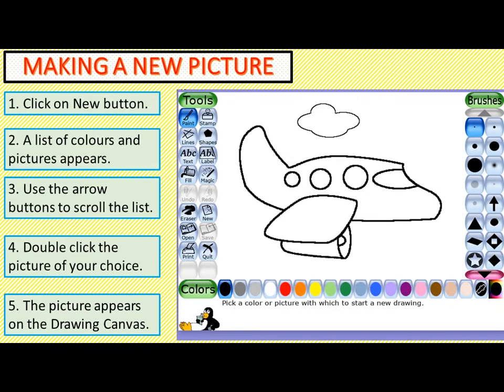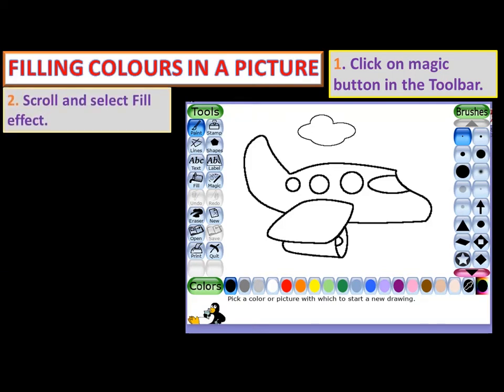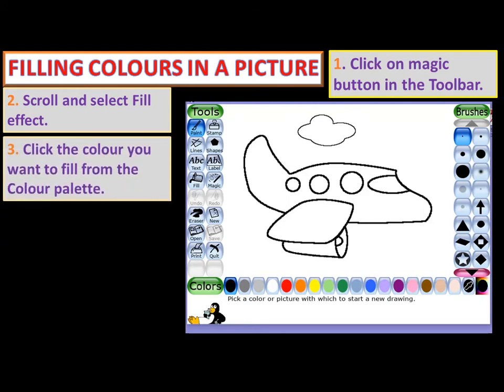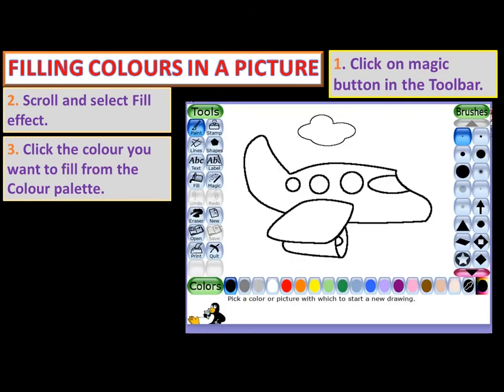Now we will see how to fill color in a picture. The first step is to click on the Magic button in the toolbar. The second step is to scroll and select the Fill Effect tool. The third step is to click the color you want to fill from the color palette.